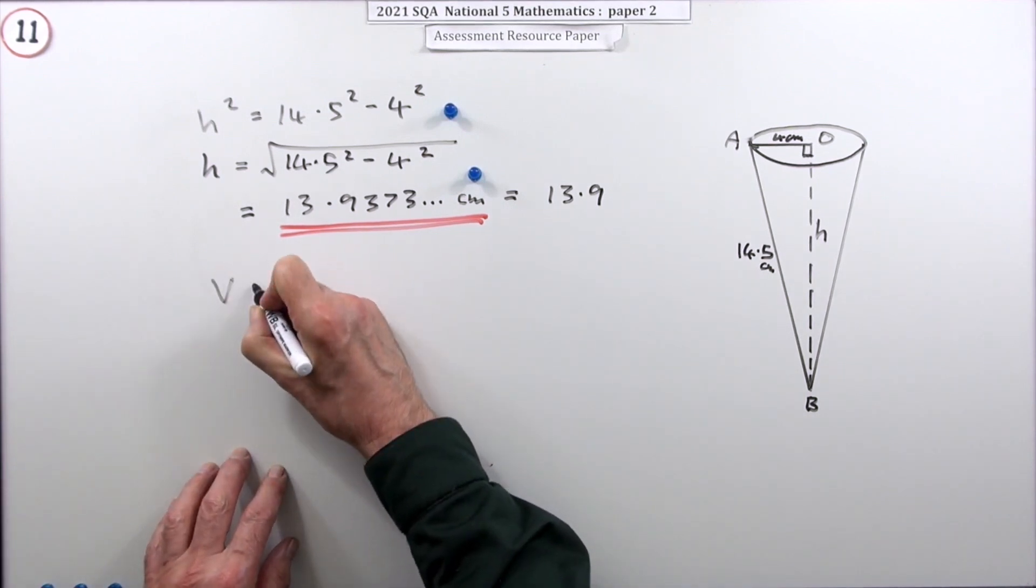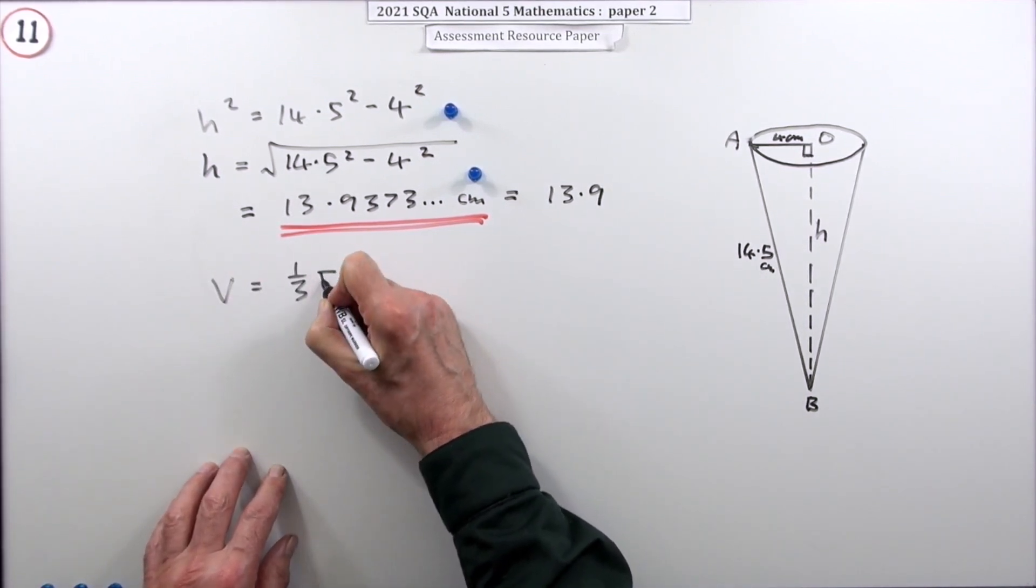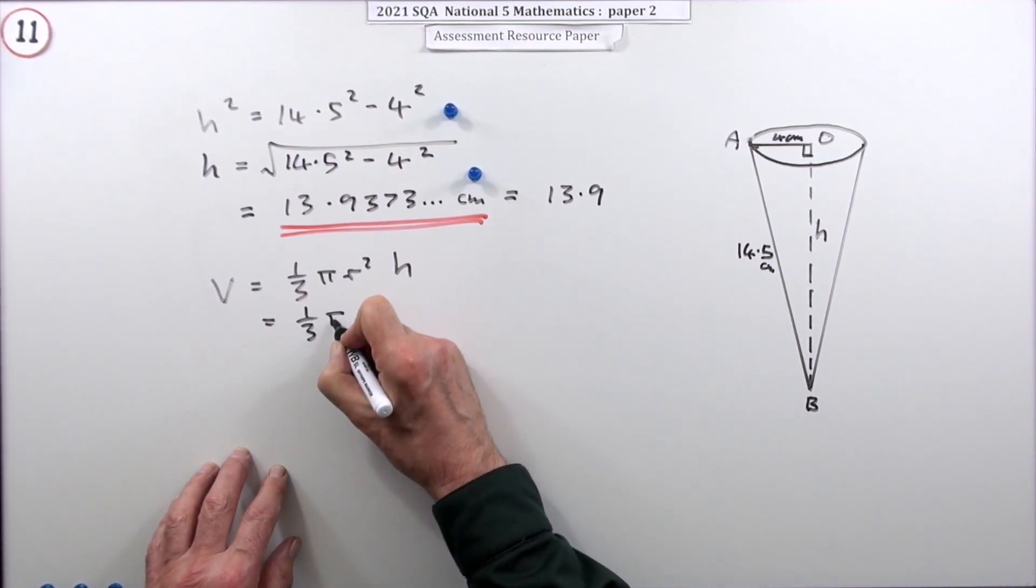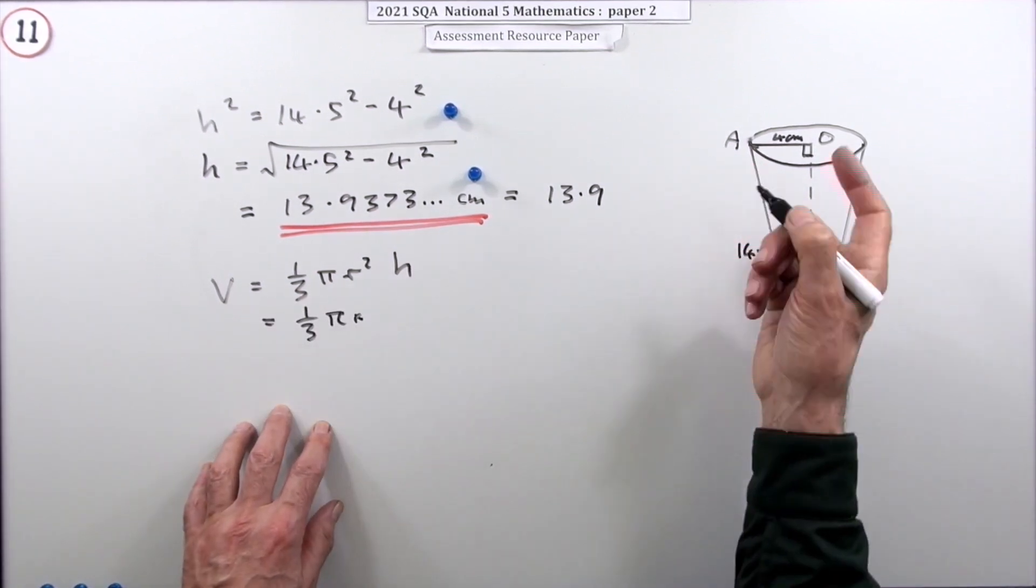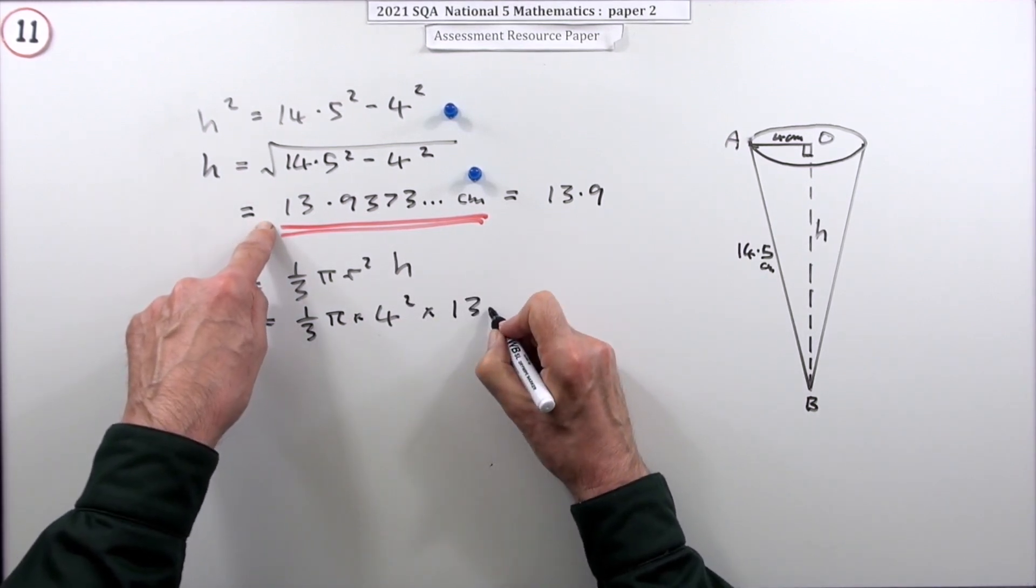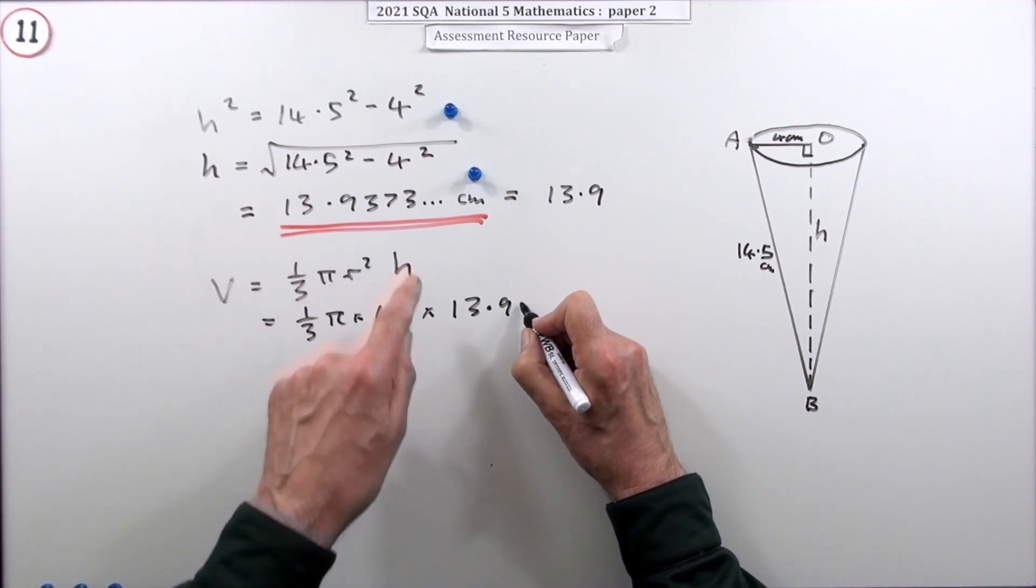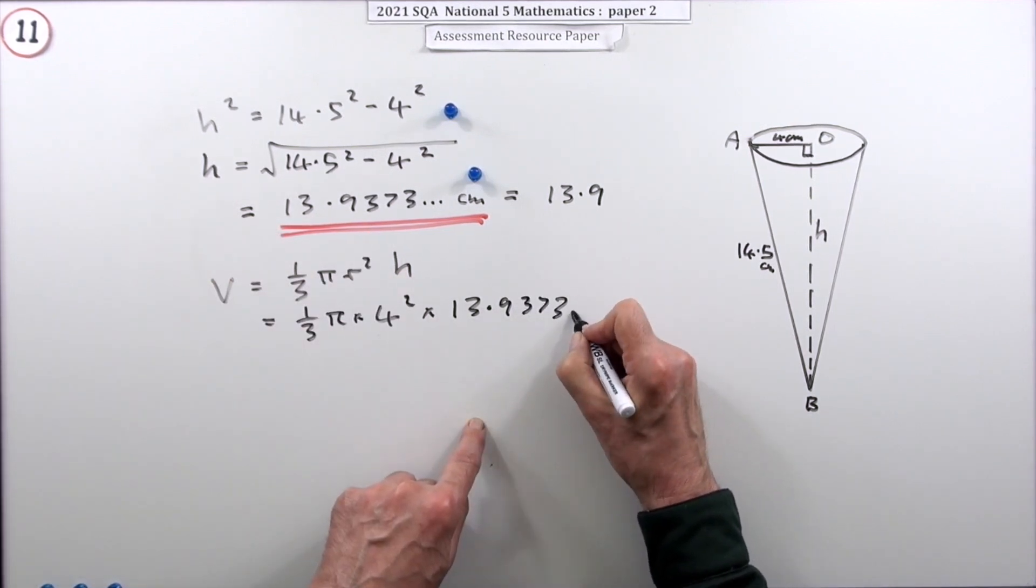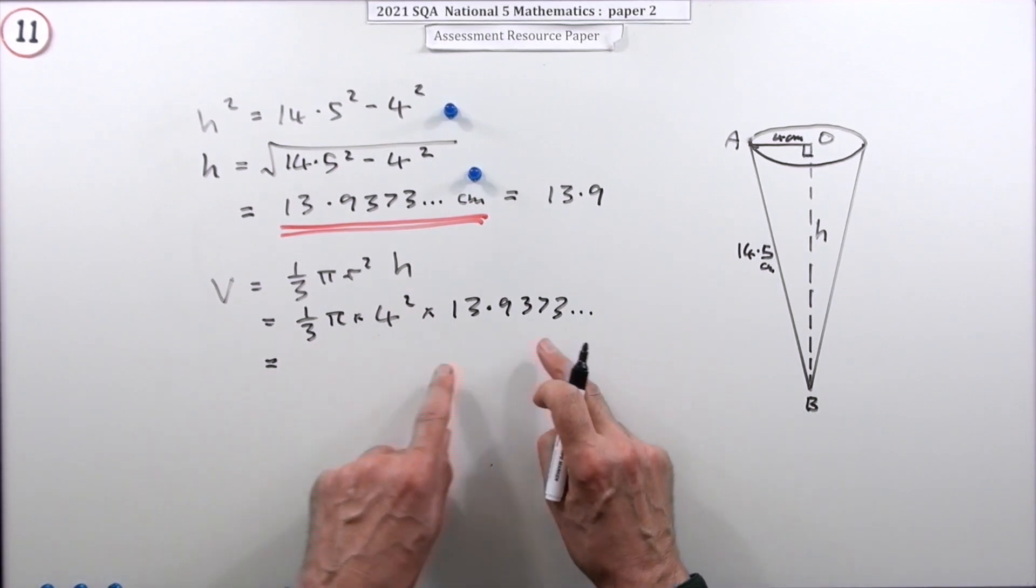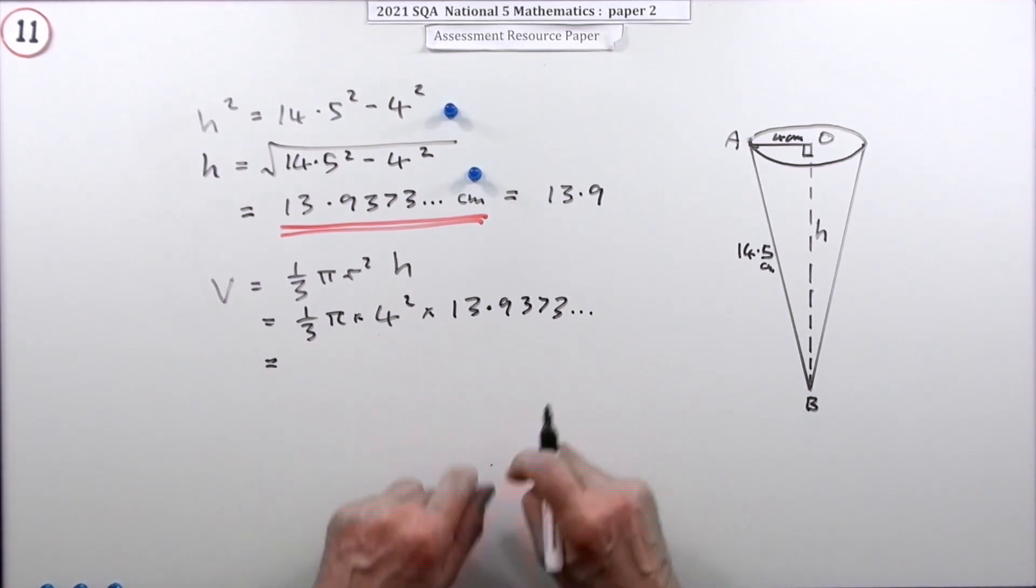Now you just put down the formula: V = ⅓ π r² h. So it's ⅓ π times the radius is 4, so it's 4² times this. So you're either going to put 13.9, or I'm going to put 13.9373... because when I come to do this calculation, I can just put answer here instead of typing in 13.9.